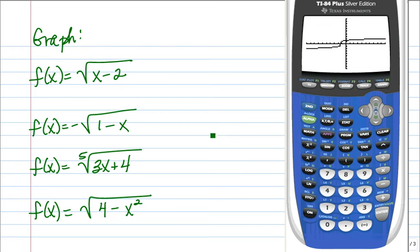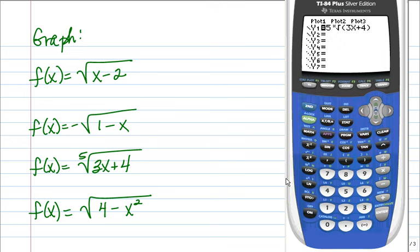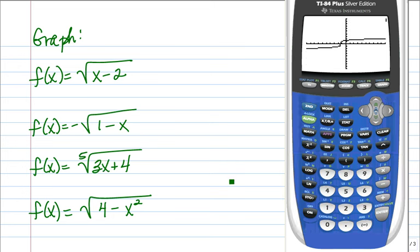And we knew that the domain of that one would be all real numbers. Now let me show you another way you can do that. Do you remember that the fifth root key means that expression raised to the 1 fifth power? So you could also type in your base of 3x plus 4, and raise it to, in parentheses, 1 divided by 5, and graph, and you'll see that those two graphs coincide with one another.